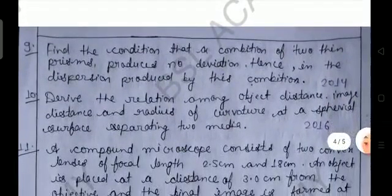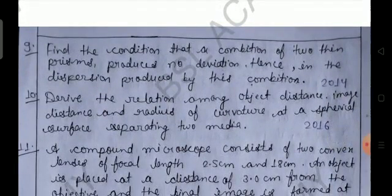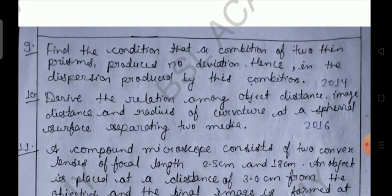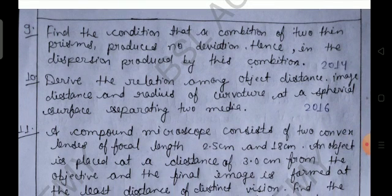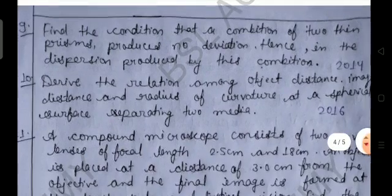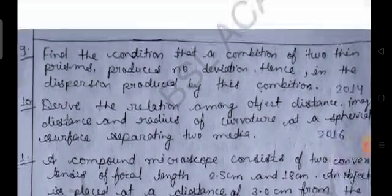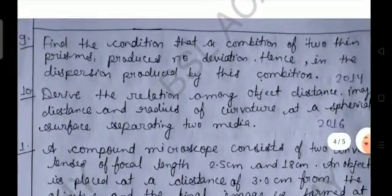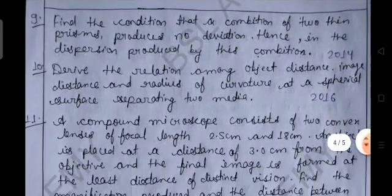Question number nine: Find the condition that a combination of two thin prisms produce no deviation. Hence find the dispersion produced by this combination. 2014. This dispersion is not in your topic, but this question on prism is a new topic, so please also complete it.